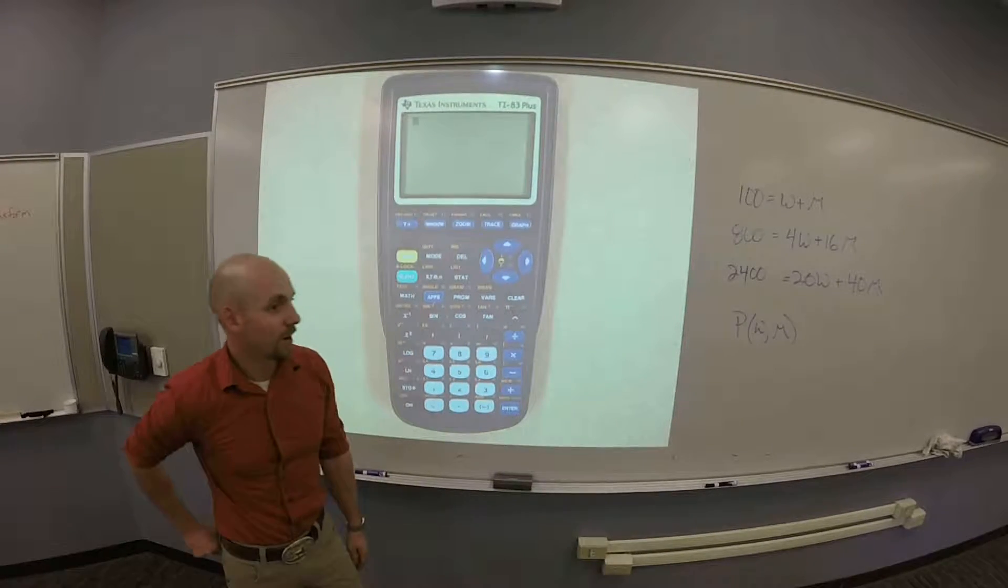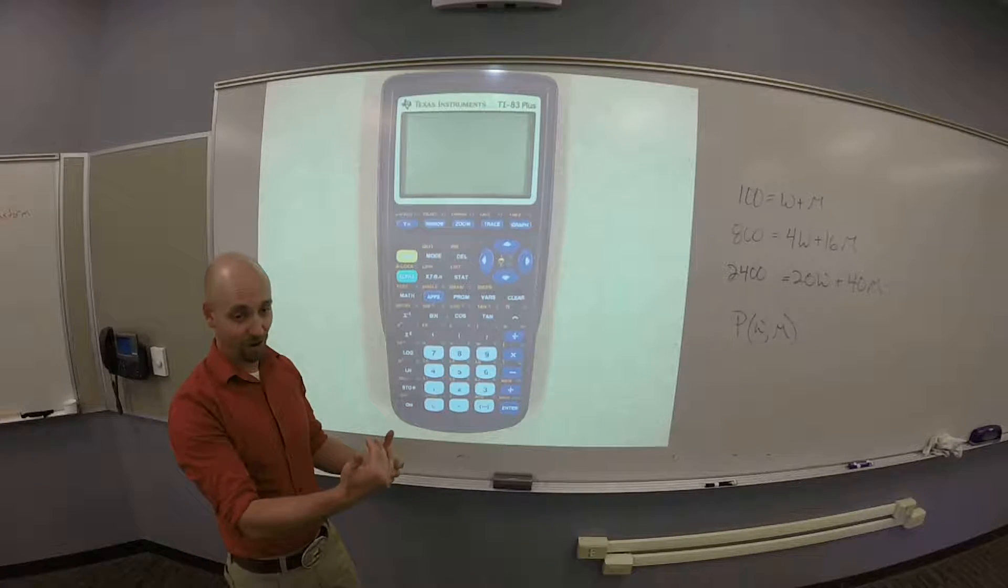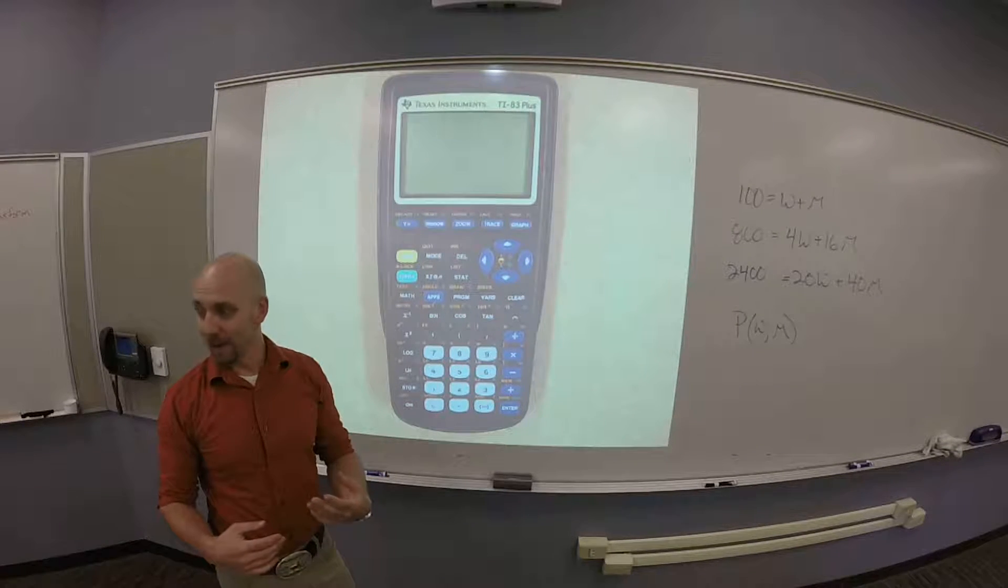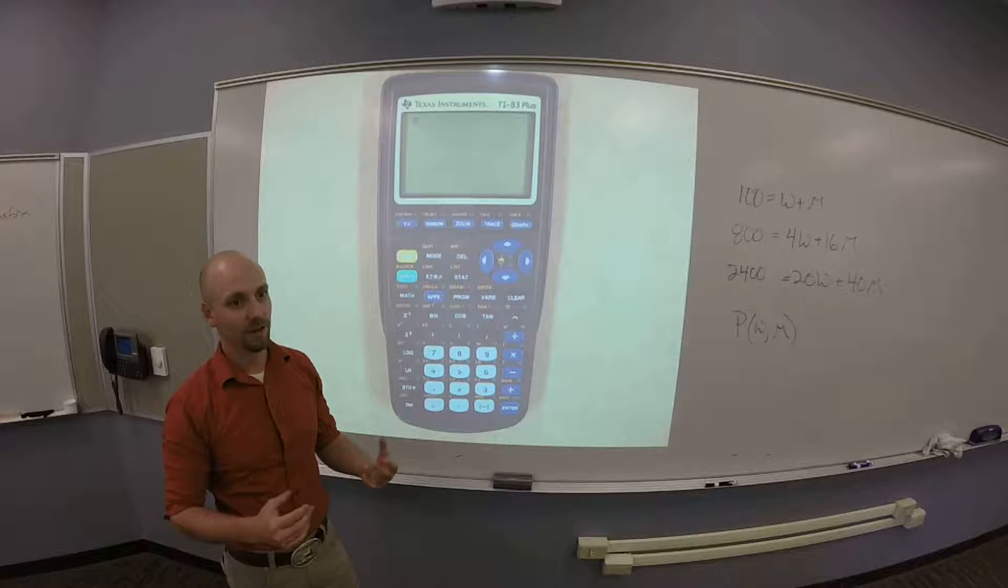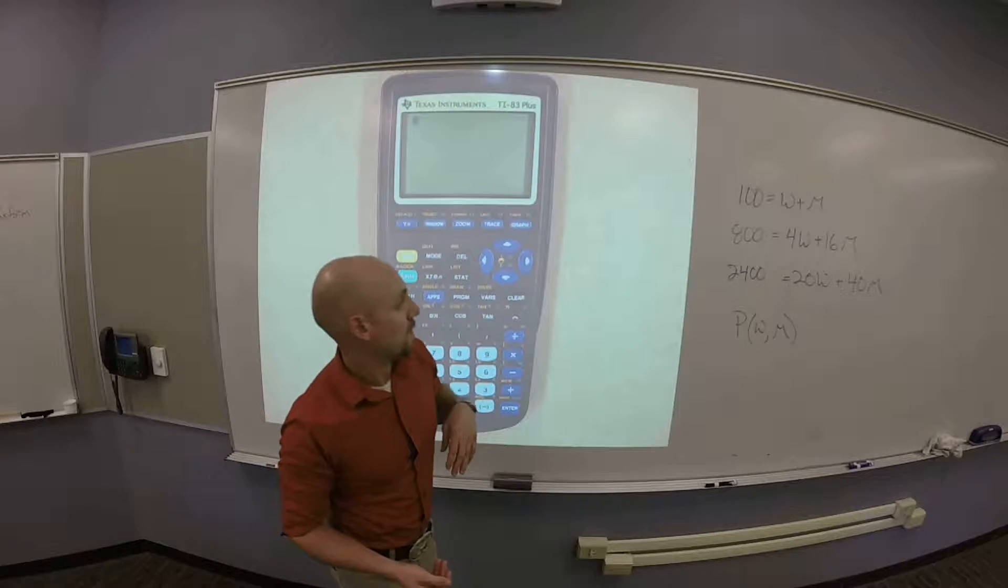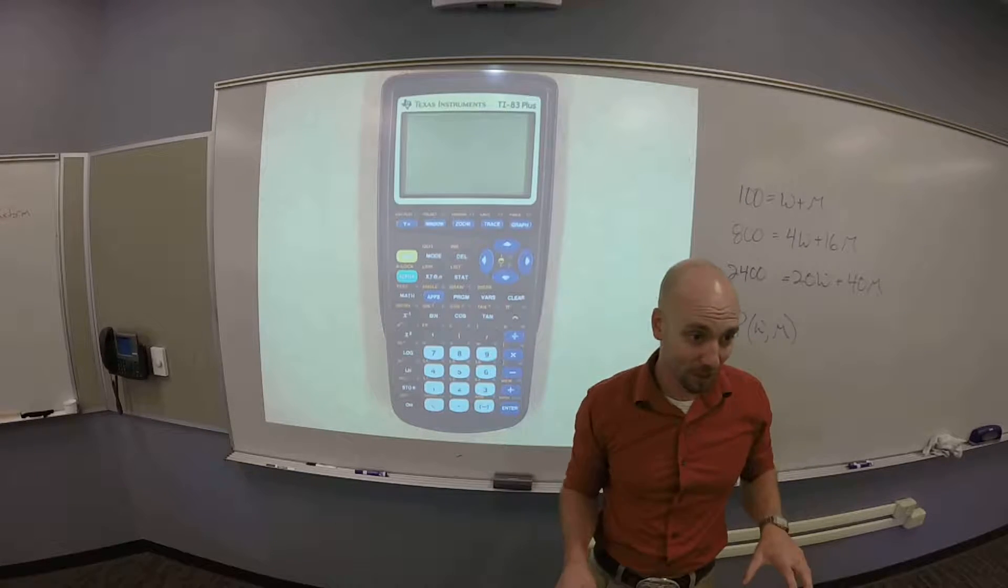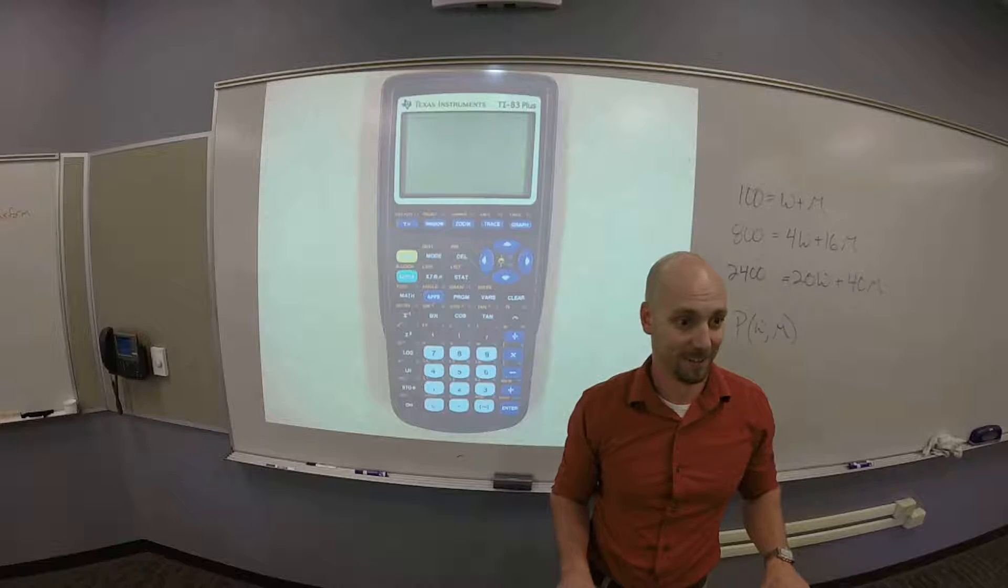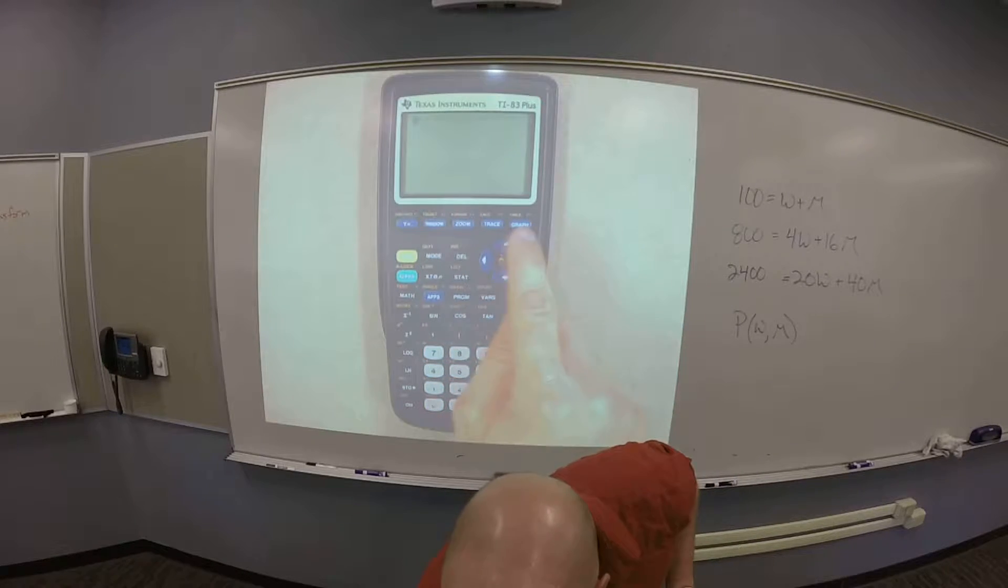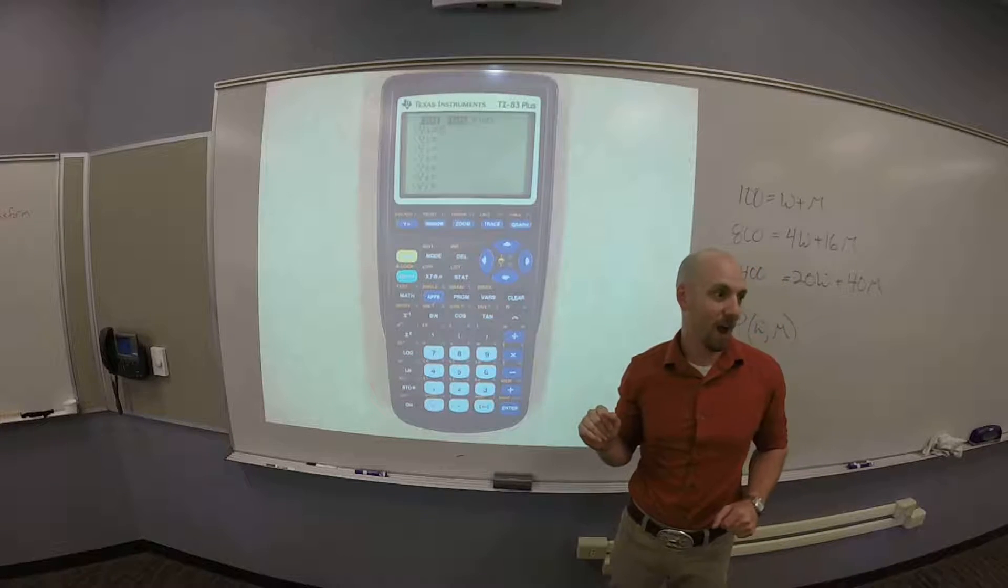So, let's see if we can figure out how to type these into a calculator reasonably so we can get our picture without having to worry about whether our picture is good enough to read off where the intersections are. So, I want to put 100 equals W plus M into my calculator. If I go to the Y equals button, it'll bring up a bunch of different things I can graph.